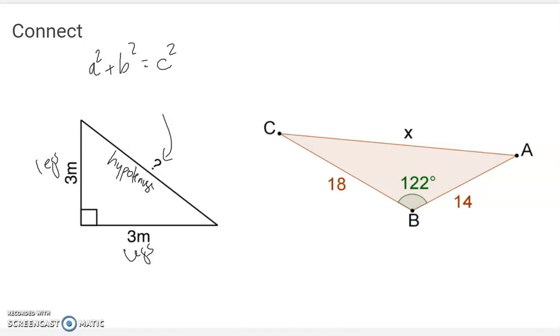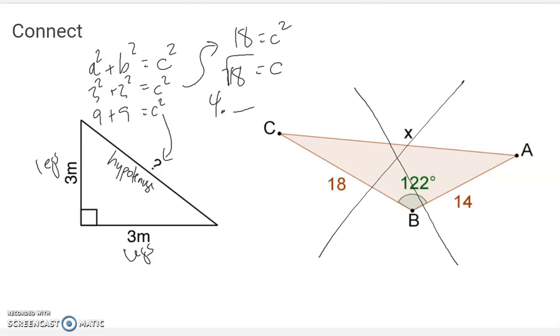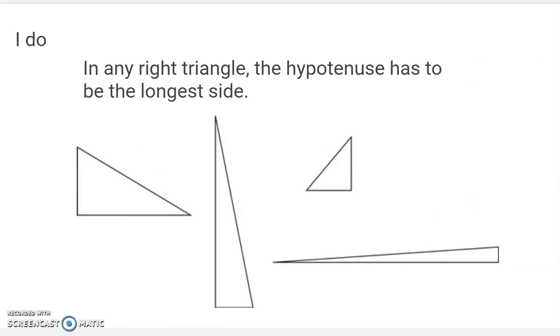In this particular instance, we would say that 3 squared, the first leg, plus 3 squared, the second leg, equals whatever c squared is going to be. So that means that 18 equals c squared. And so that would mean that c is whatever the square root of 18 is, which is a little more than 4. That's what we've done. And remember too, that only works for right triangles, so I couldn't use that Pythagorean theorem here, because that's not a right triangle.